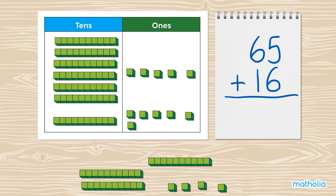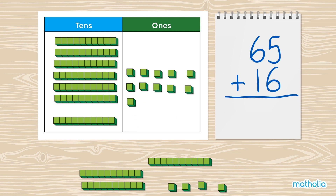First, bring the ones together and find the total. There are 11 ones in total. Let's replace 10 ones with 1 ten.